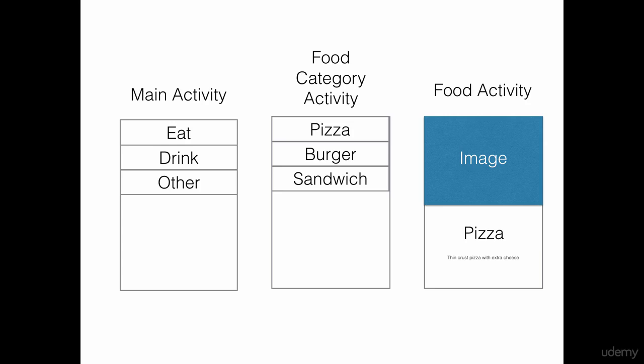If you clicked on burger, it's going to show you an image of a burger, the name as burger, and the description of that particular food item. So this was a brief overview of the list view application which we are building here.